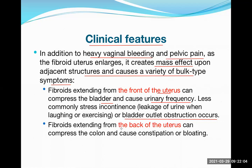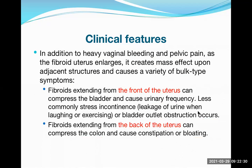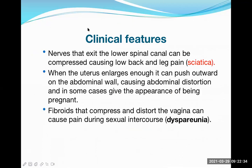Fibroids extending from the back of the uterus can compress the colon, causing constipation or bloating — for example, compression of the sigmoid colon makes it difficult to pass stool or causes gas collection. Additionally, nerves exiting the lower spinal canal can be compressed, leading to low back pain and leg pain — this is known as sciatica, a compression of the roots or trunk of the sciatic nerve.